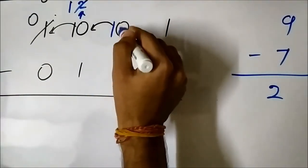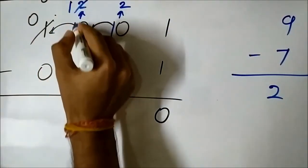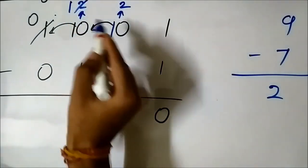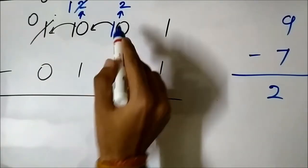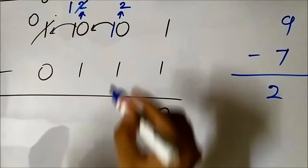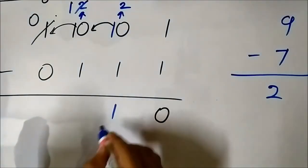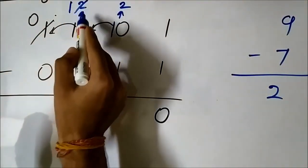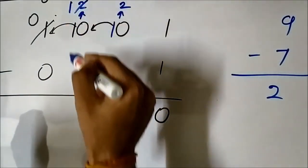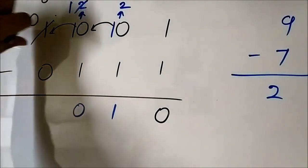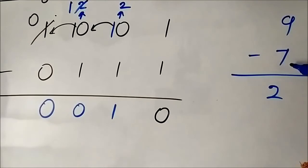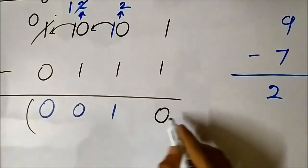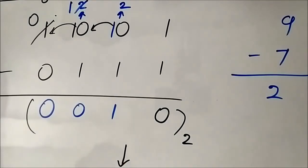Now performing the subtraction: 2 minus 1 is 1. This middle bit, after giving 1 to its neighbor, becomes 1, so 1 minus 1 is 0. The bit that originally donated has already exhausted its 1 bit and becomes 0, so 0 minus 0 is 0. The result is 0010, which in decimal is 2. So 9 minus 7 equals 0010 in binary, confirming the decimal result of 2.